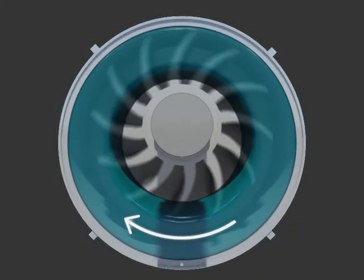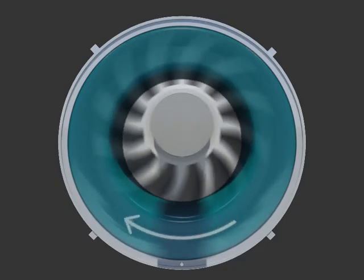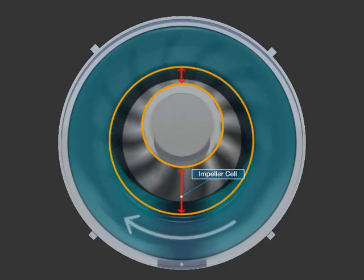The impeller spins at the speed of 495 rpm and the seal water becomes the form of a liquid ring because of the centrifugal force.